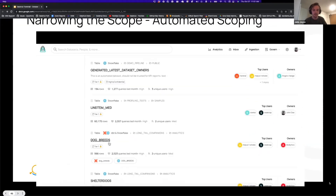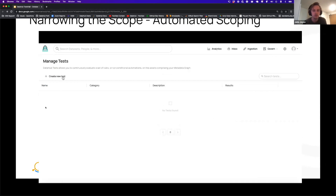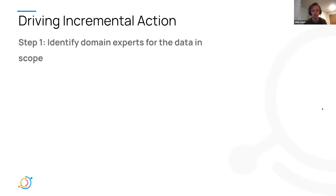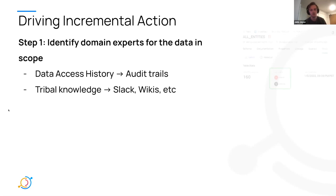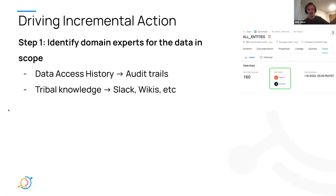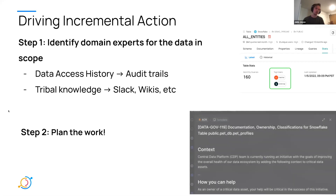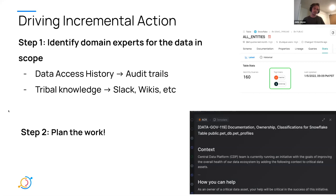Once we've identified the scope of the assets that need to be governed, we move on to driving incremental action — the third step. We're going to identify the experts for the data in scope — the people that should own those 91 assets. You can do this by looking at actual Snowflake access history manually, or you can use something like Data Hub which surfaces that for you, or you can use tribal knowledge. And then finally, you have to actually do the work to get ownership, documentation, and classification on those 91 assets. There's no way around that — you have to have human intervention in this process.